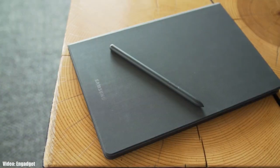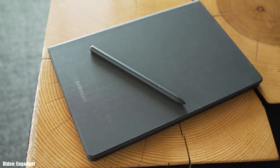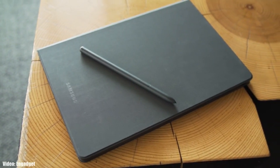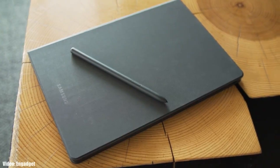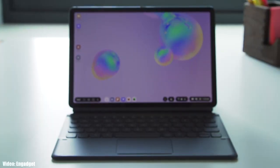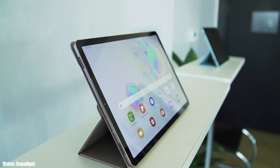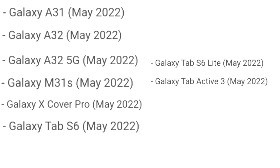Samsung has released the official Android 12 update based on One UI 4.1 for the Galaxy Tab S6 series, which includes the Galaxy Tab S6 and the Tab S6 Lite. This update was initially scheduled to be released in May according to the roadmap, but Samsung is releasing it ahead of schedule.